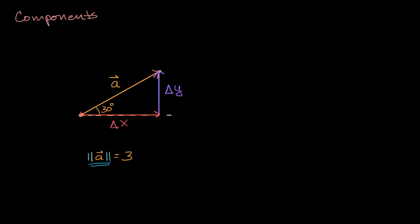The notation for this is we would say that vector A is equal to, and we'll have parentheses, and we'll have our change in X comma change in Y. And so if we wanted to get tangible for this particular vector right over here, we know the length of this vector is three, its magnitude is three.